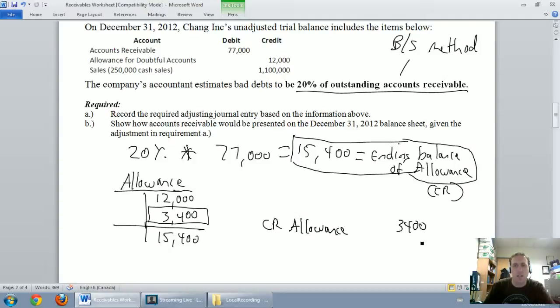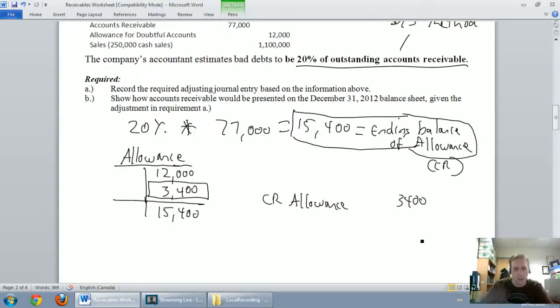Again, if it's missing in a T-account, the way to remedy that is to do a journal entry. So, on December 31st, I'm going to credit my allowance for $3,400.